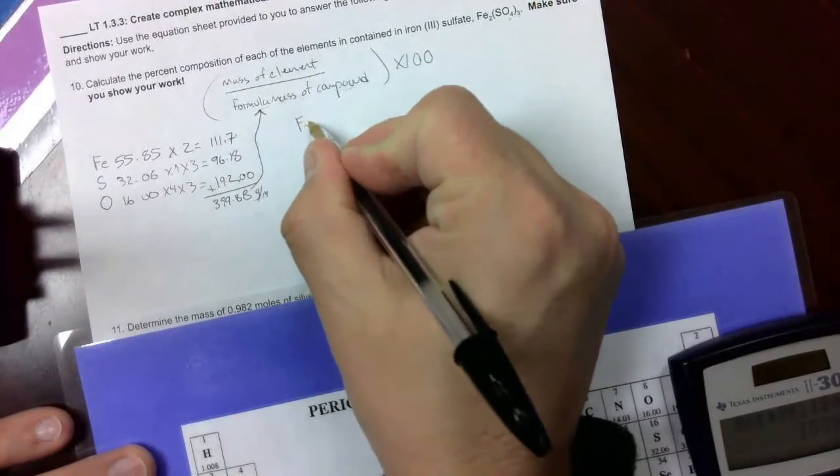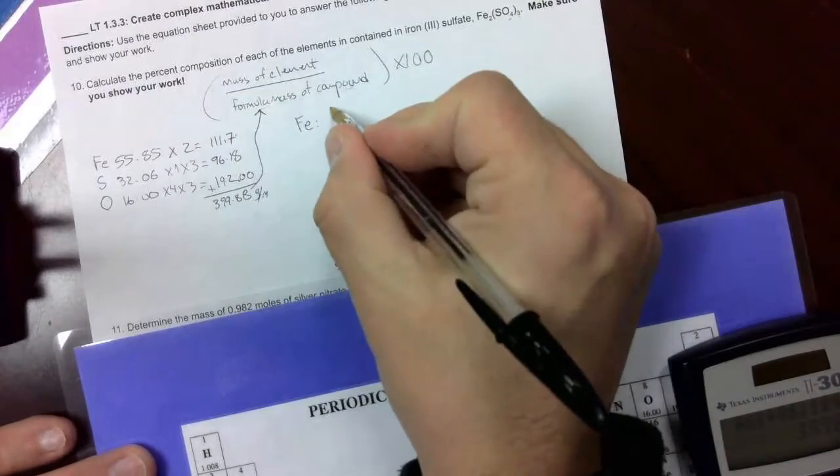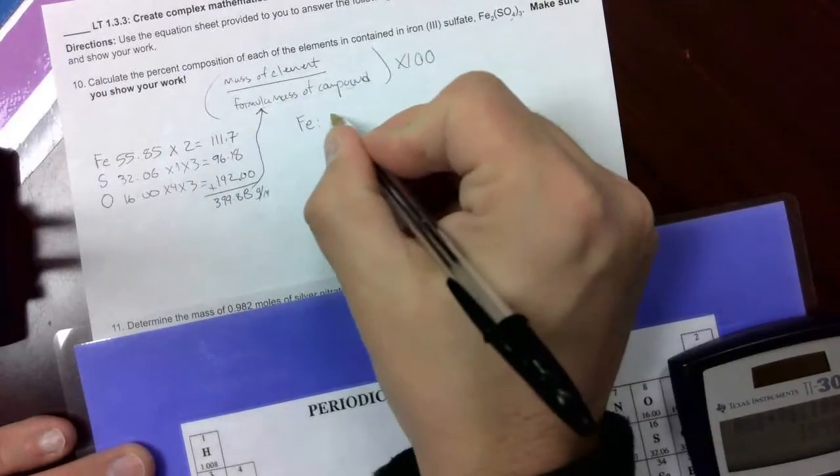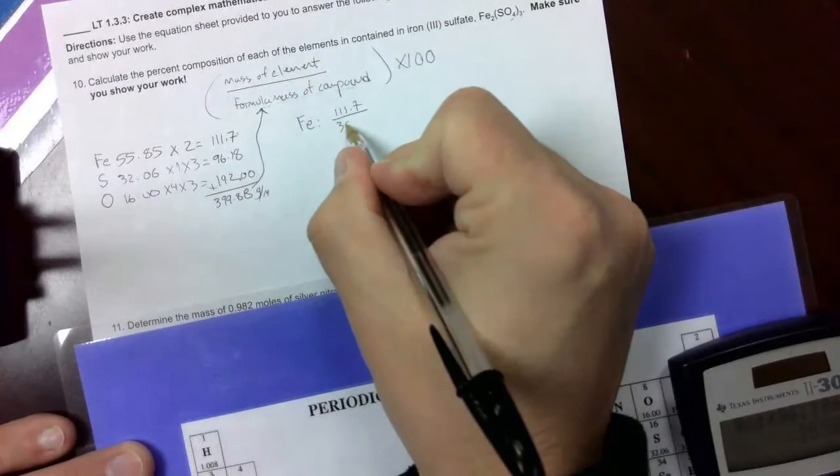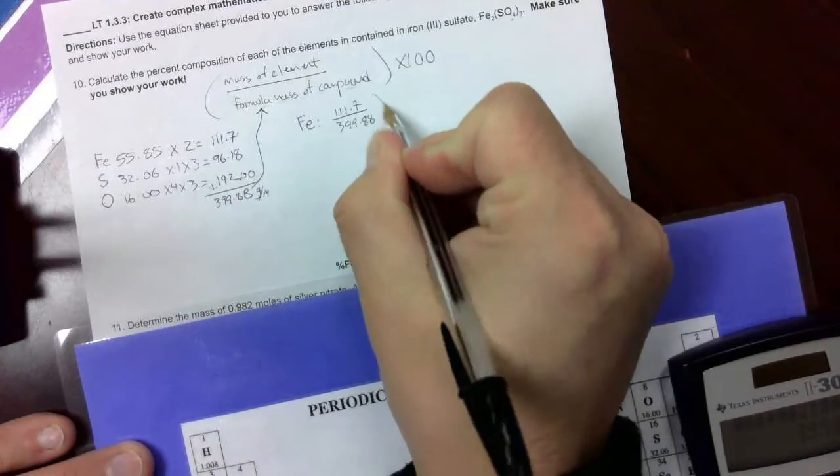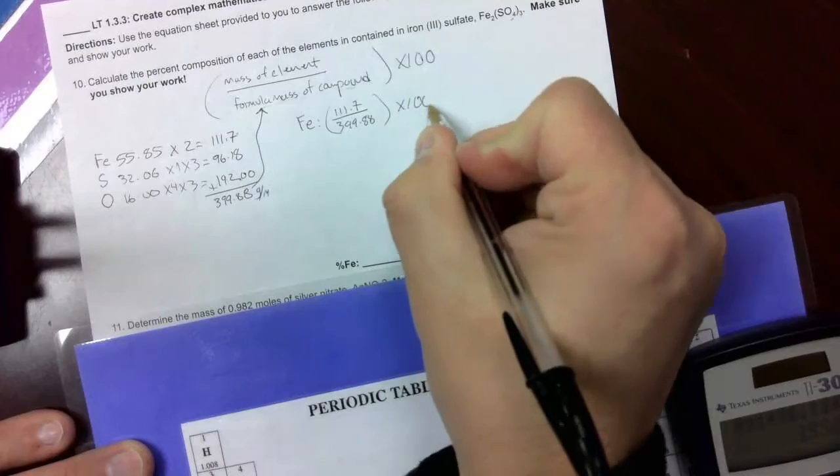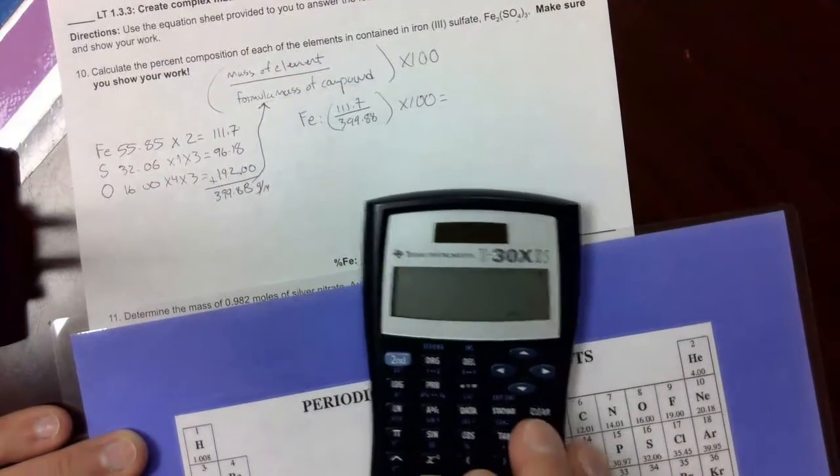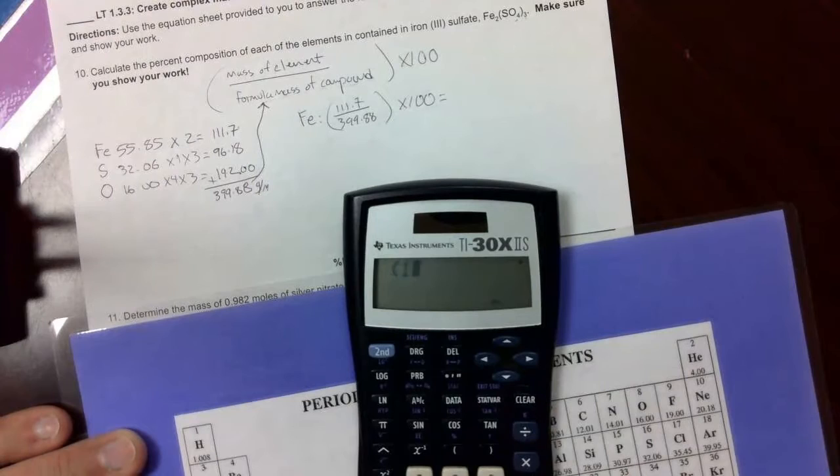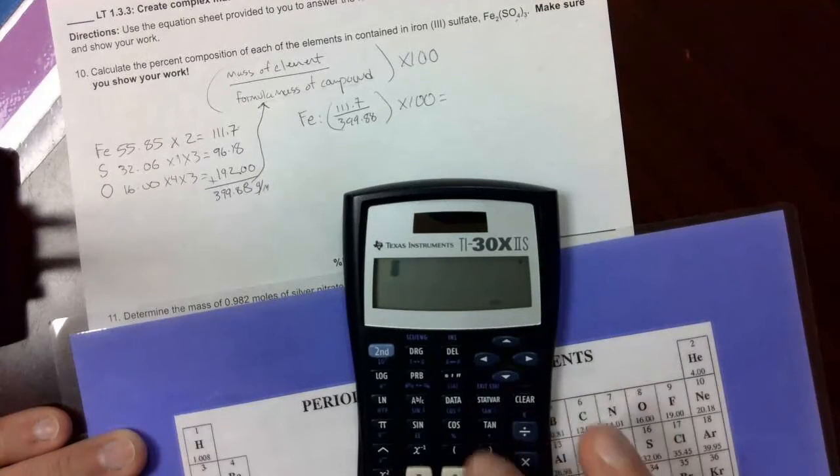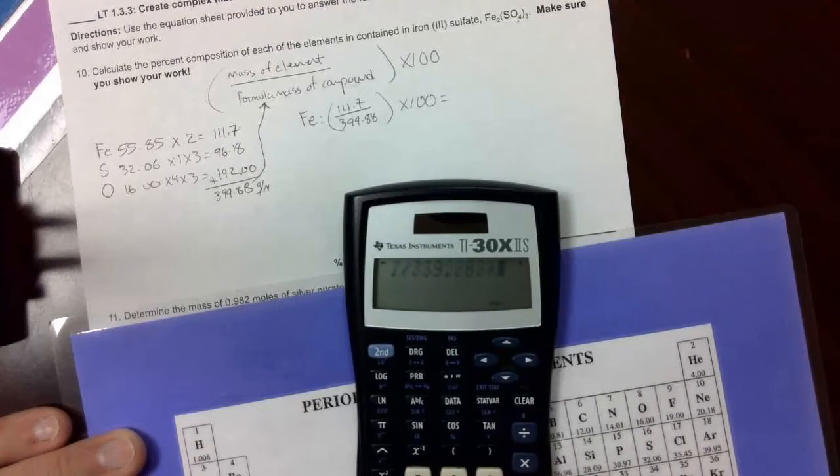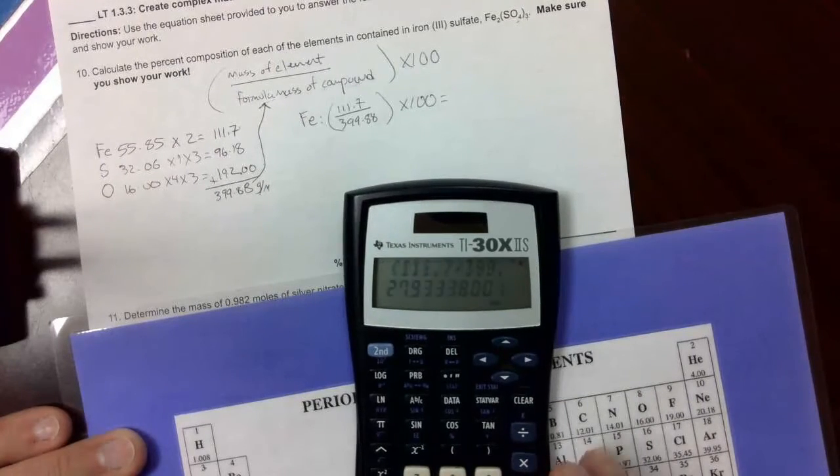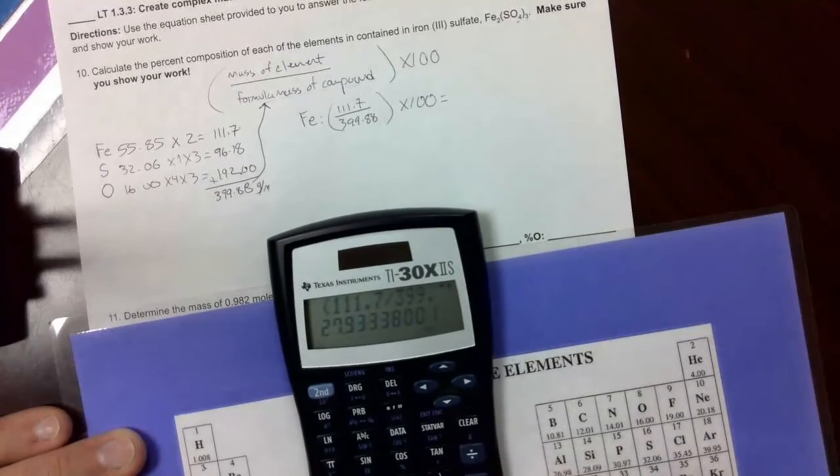So for iron, we're going to calculate the mass that is just iron, 111.7, divided by the total mass, 399.88, times 100. And we're going to type that in our calculator exactly like it shows up. So parenthesis is 111.7, divided by 399.88, close parenthesis, multiplied by 100, and we get 27.9%.